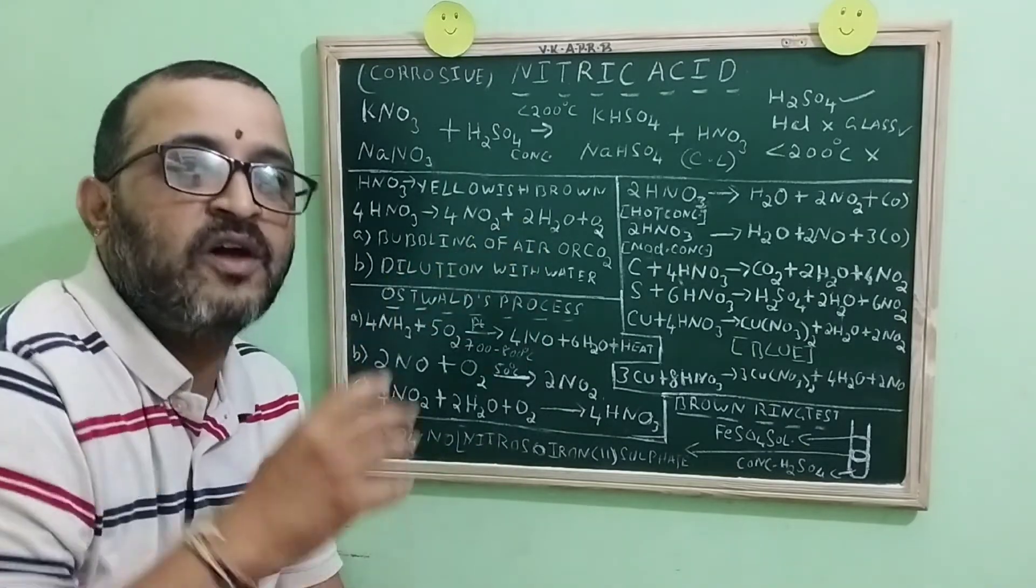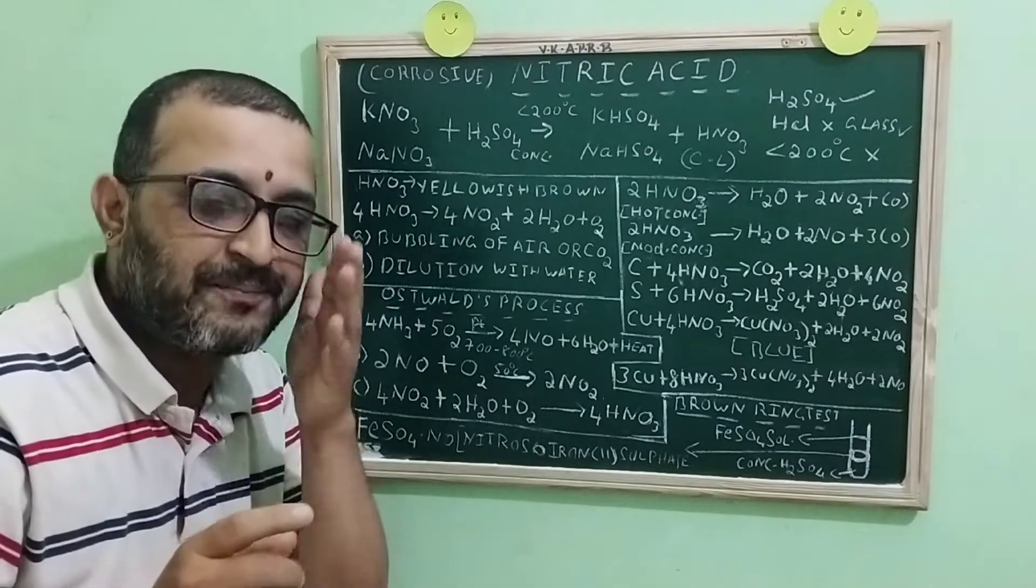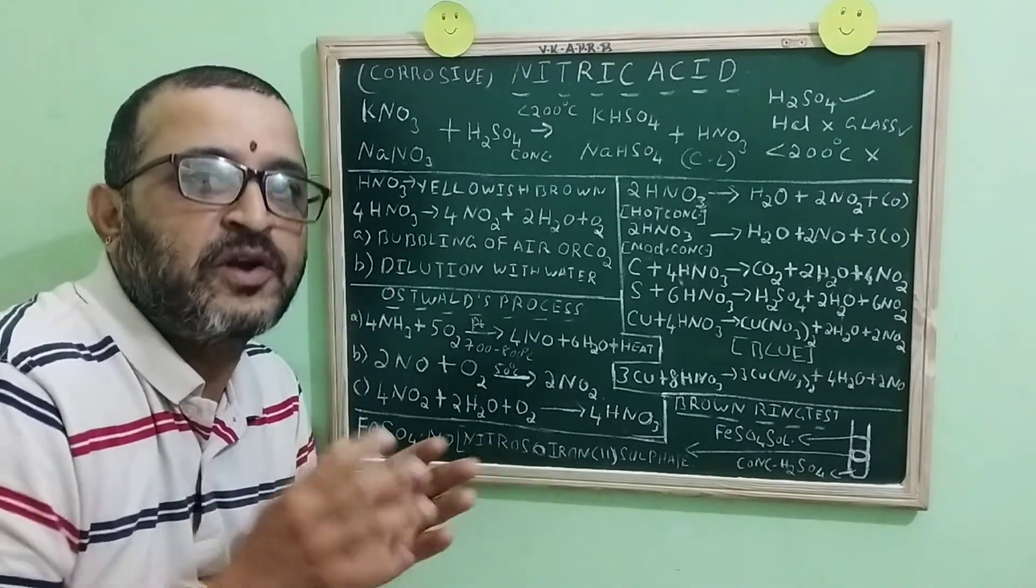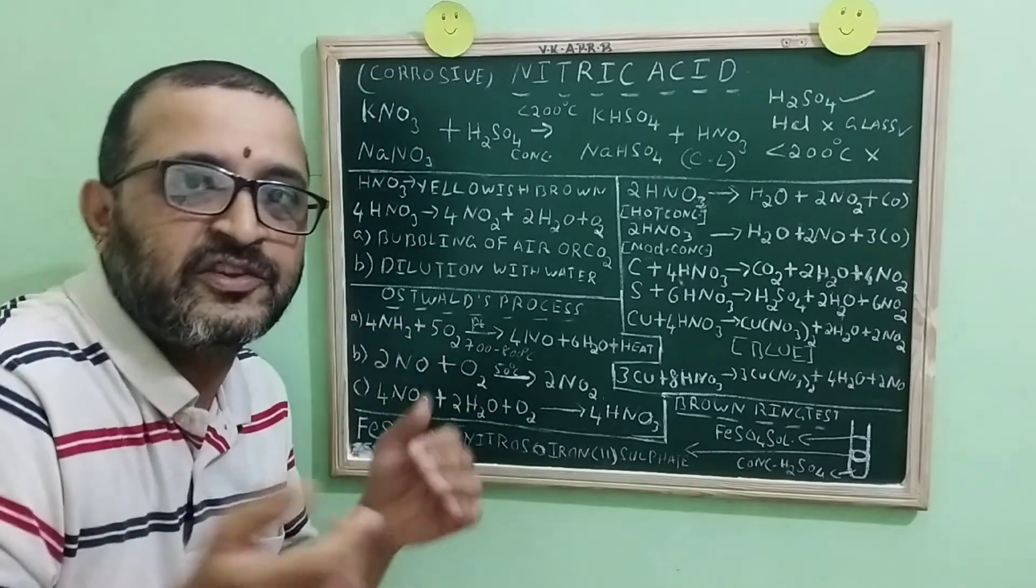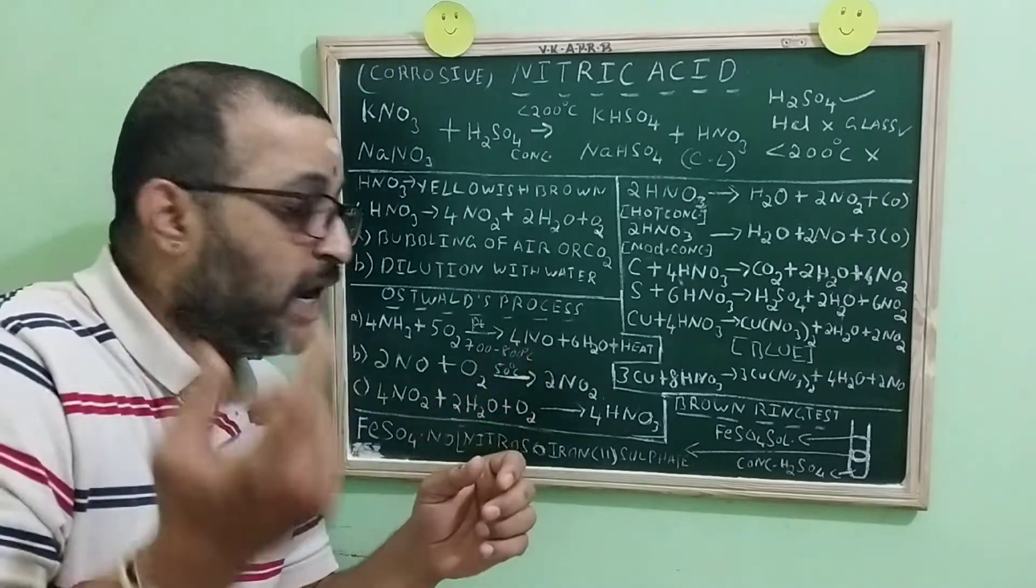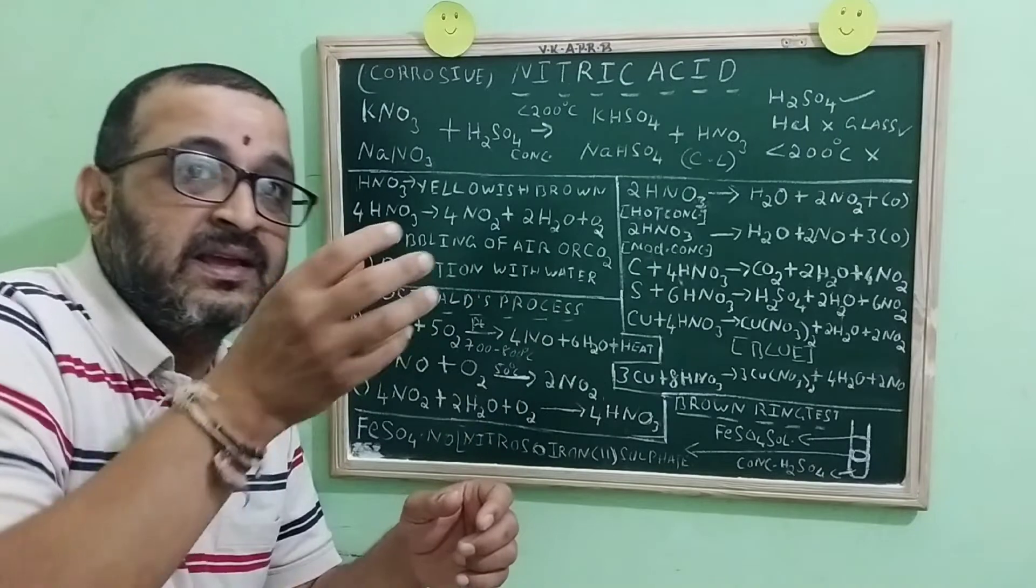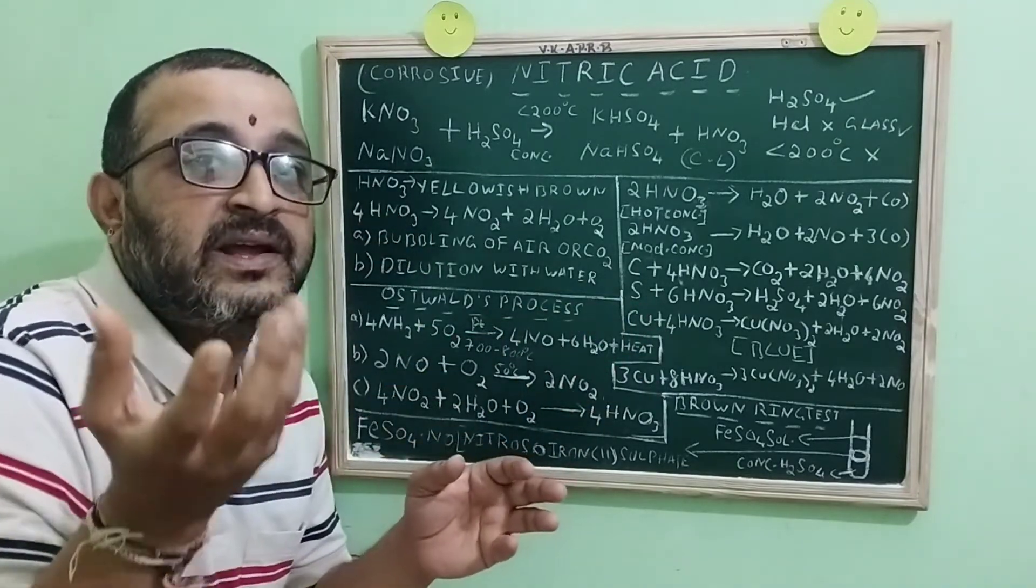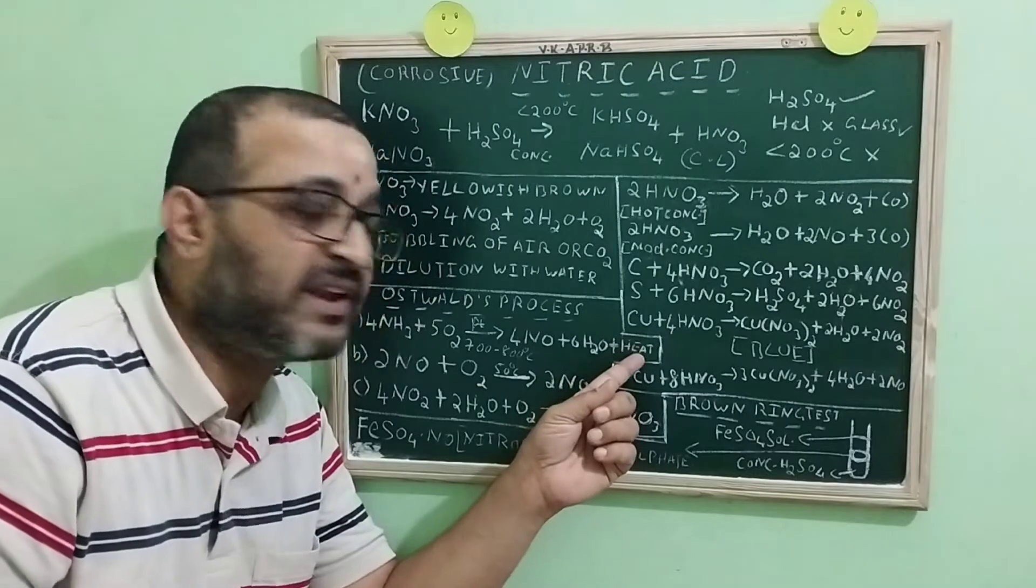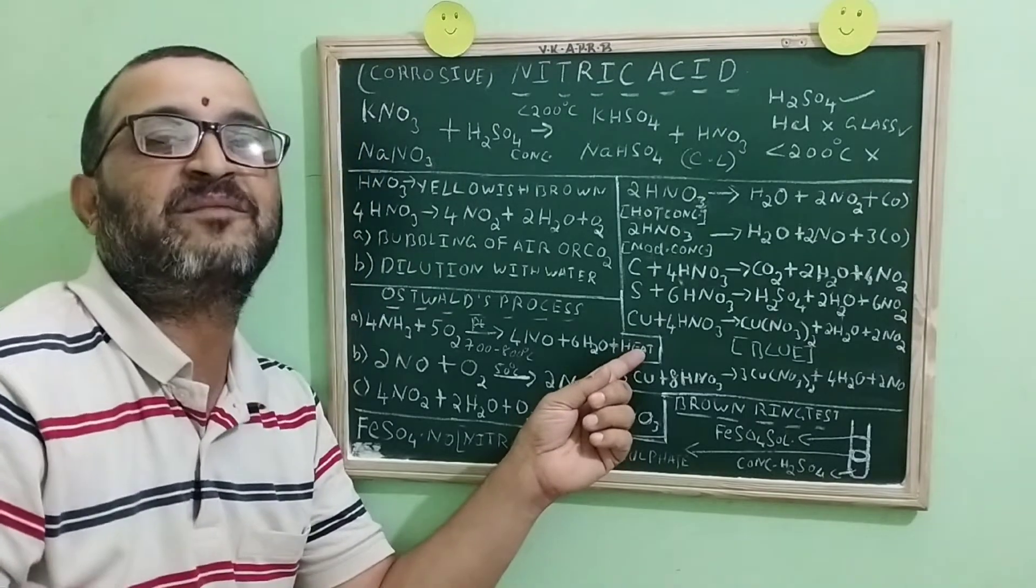Questions from Oswald's process. Question number 1. Which gas is used to produce nitric acid? Obviously, it is ammonia. What is the catalyst used? Platinum. Even after the heating is stopped, the catalyst glows bright. Why? Because the nature of the reaction is exothermic.